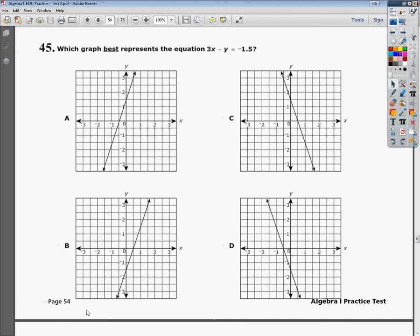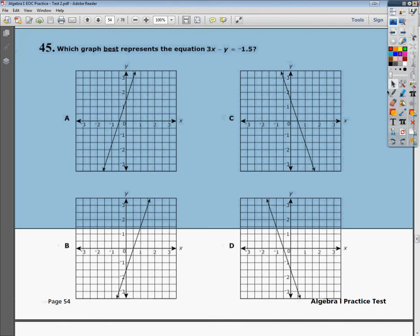So, we're going to do it in slope-intercept form, which means I have to get y by itself. That's the key component, y being by itself. Apparently, y likes to be alone. It's a very lonely variable, I suppose.